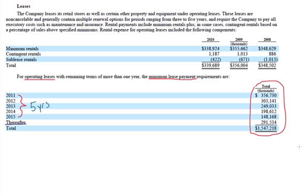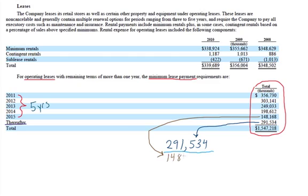Two key factors play a role in our present value model. One, we have to distribute the thereafter number. Our methodology assumes that future payments beyond five years approximate the fifth year amount. So in this example, if we take the $291,534 and we divide that by the fifth year amount of $148,168, we get to approximately two years' worth of runoff.